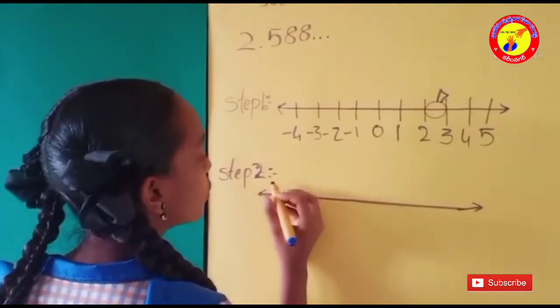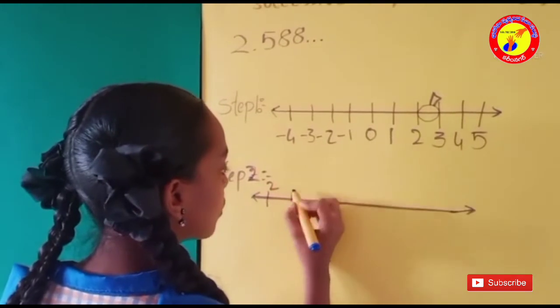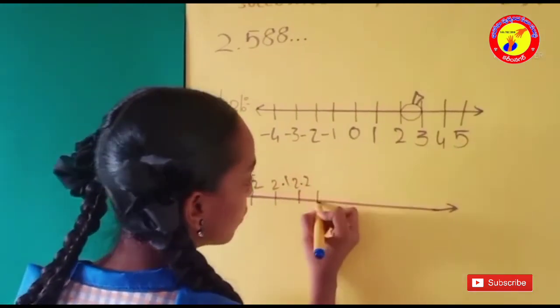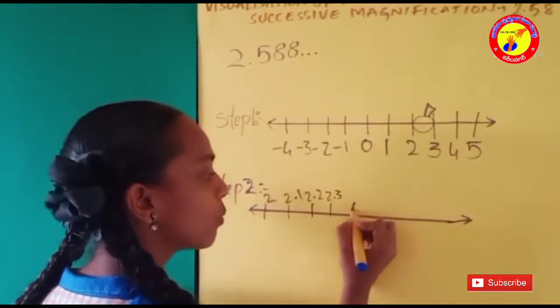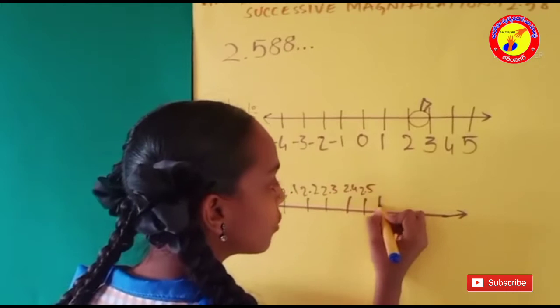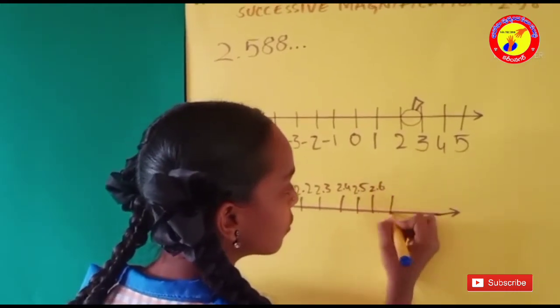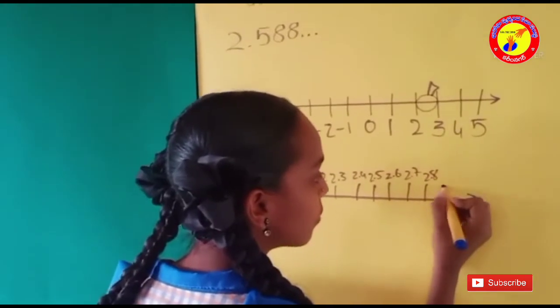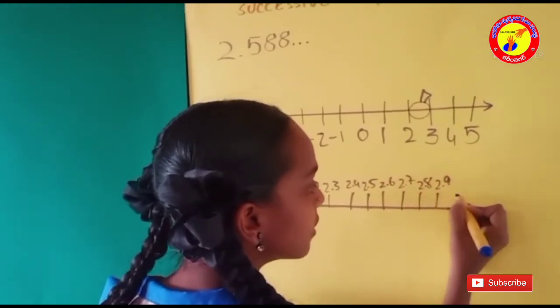With 2, 2.1, 2.2, 2.3, 2.4, 2.5, 2.6, 2.7, 2.8, 2.9, 3.